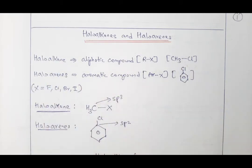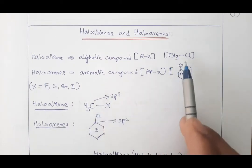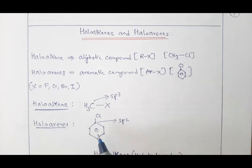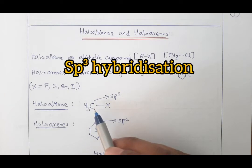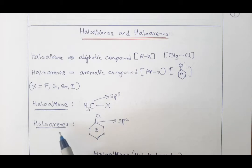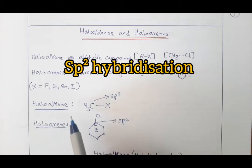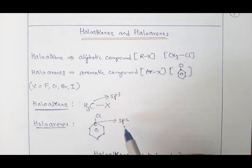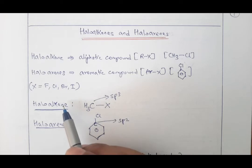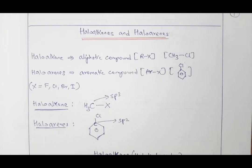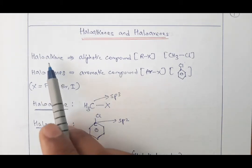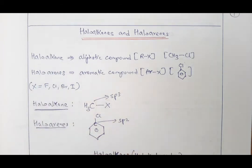In haloalkane, X is written in place of halogen. The carbon attached to the halogen in haloalkane shows sp3 hybridization. In haloarenes, however, the carbon at the corner of the benzene ring bonded to the halogen shows sp2 hybridization. You can remember this because alkane relates to sp3, and alkene relates to sp2. From today we will learn haloalkane first, then move to haloarenes.